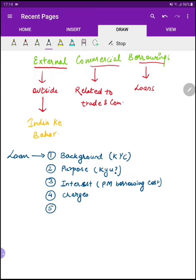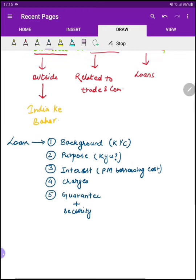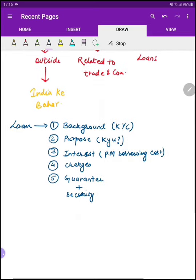फिर वो आपसे बोलेंगे — चलो loan तो ठीक है हम आपको दे देंगे, लेकिन आपके इस behalf पर guarantee कौन लेगा? अगर कल को आप bankrupt हो गए या भाग गए, तो ये जो loan हमने आपको दिया है वो outstanding रह जाएगा। हमारे पास क्या security रहेगी? तो आप एक तो guarantee दो, और जो ये loan ले रहे हो इसके उपर हमको security भी चाहिए — यानि आप इसको cover करके जाओ ताकि अगर कल को कुछ हुआ तो हम इस asset को बेचकर अपना loan realize कर सकें।